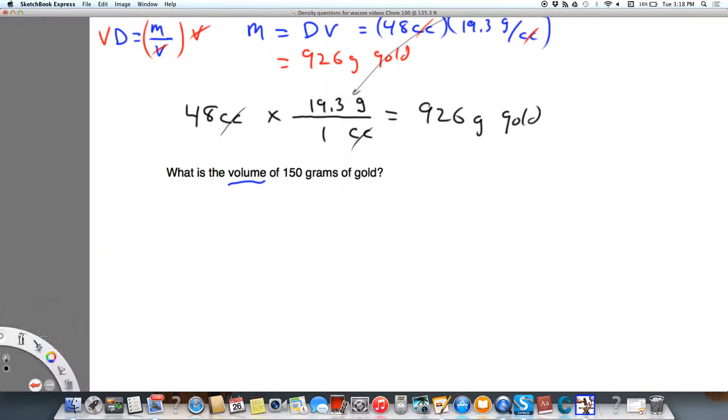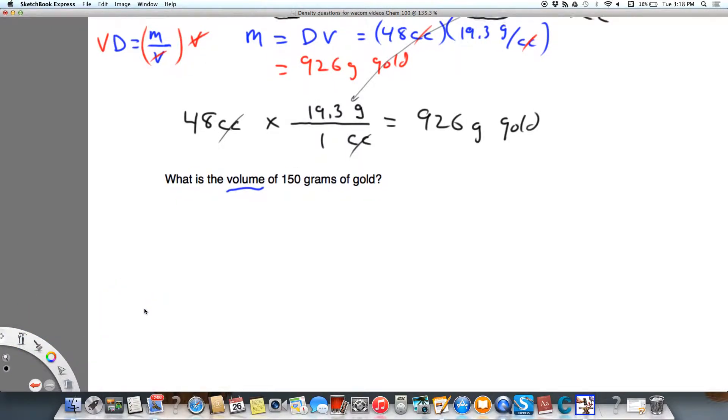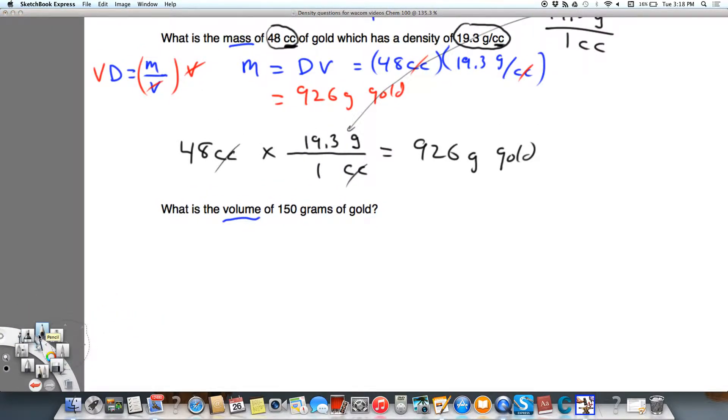Now this one's a little trickier. What is the volume of 150 grams of gold? One thing we have to take into account is not given, but it's given in the previous problem: we know the density is 19.33 grams per cc.